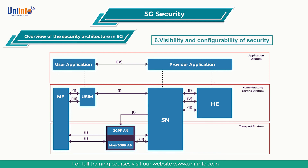Visibility and configurability of security is the set of features that enable the user to be informed whether a security feature is in operation or not. Note that visibility and configurability of security is not shown in the figure.